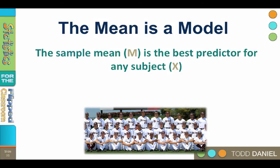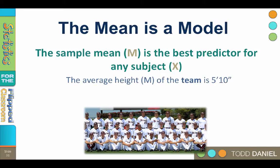Beginning with the concept that our mean is a model, we can begin making predictions. So I am going to choose a player at random from our team with an average height of 5 foot 10 and ask you to predict that player's height.